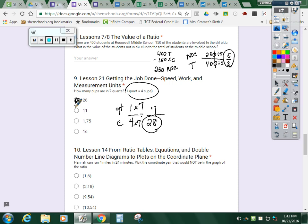Lesson 14, number 10. Hannah can run four miles in 24 minutes. I hate when it's miles and minutes because they're both M's. So I'm going to be a little bit more specific with my labeling. Pick the coordinate pair that would not be on the graph of the ratio. So if you look at your miles, you are timesing it by six to get your minutes. So let's take a look at these and see which one you don't time six by. One times six is six. Three times six is 18. Nine times six is 54. Ten times six should give you 60. This one will not be on the graph.